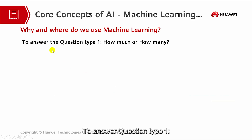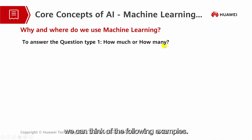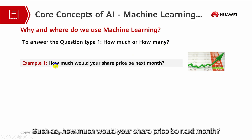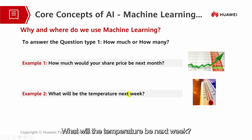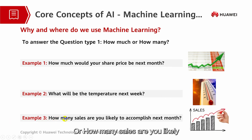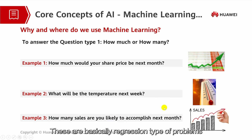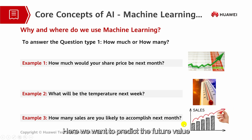To answer question type 1 — how much or how many — we can think of examples such as: how much would your share price be next month? What will the temperature be next week? Or how many sales are you likely to accomplish next month? These are basically regression-type problems that work on continuous data, where we want to predict a future value based on the analysis of historical data.